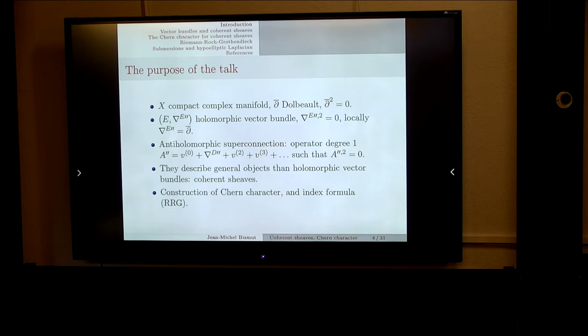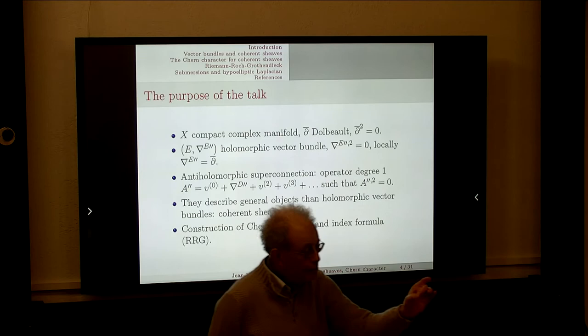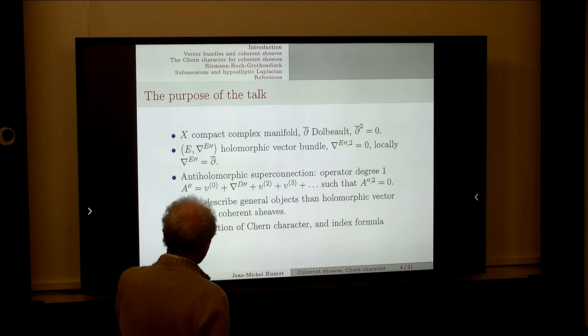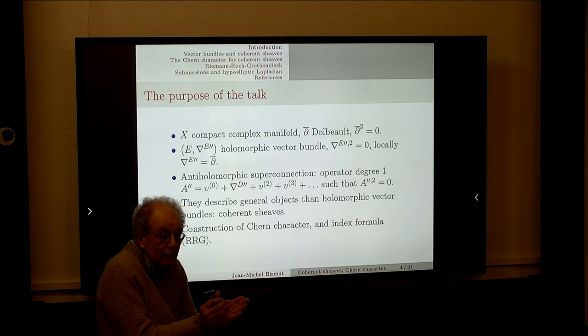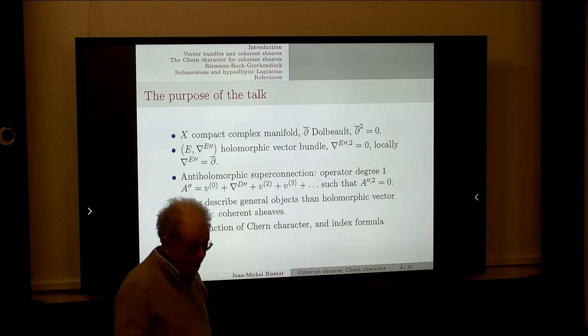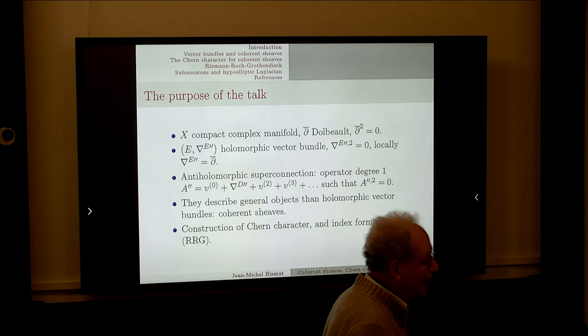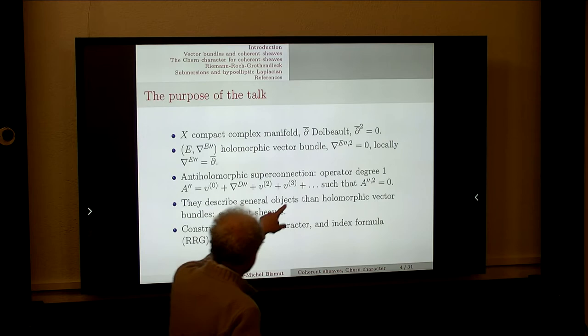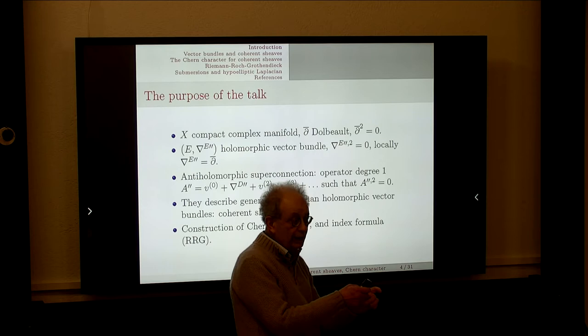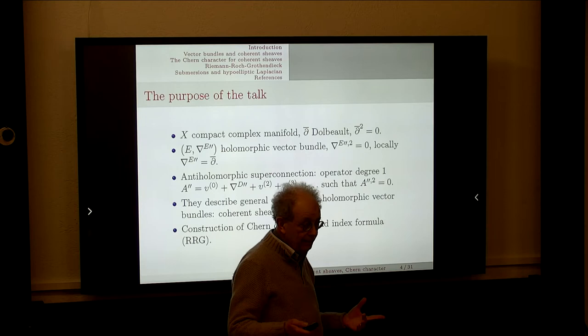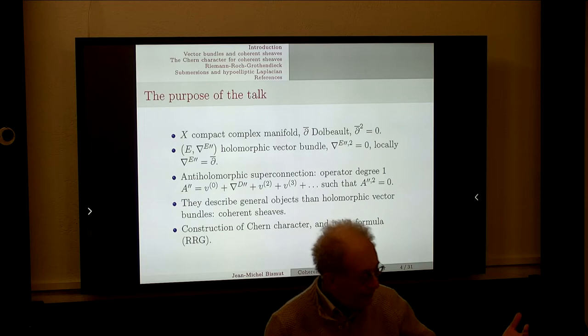Audience question: That D-bar in the second bullet—is it a slightly different D-bar, not the one up there? Speaker: Yes, it's not the same. But locally, you can write this vector bundle as C to the K equipped with a D-bar operator. The holomorphic structure is already introduced on the manifold but not on the vector bundle. The vector bundle turns out to be, locally, C^K equipped with a D-bar operator. The Newlander-Nirenberg theorem, given an operator whose square vanishes, says that locally you can write this vector bundle as C^K equipped with a D-bar operator.